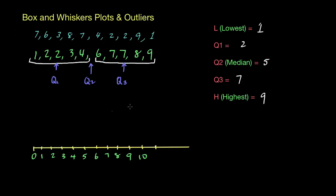So once this scale is created, what we do is we take the five numbers that we created with the five number summary and we just place a dot above the scale where each of these numbers are. So we've got one, two, five, seven, and nine.